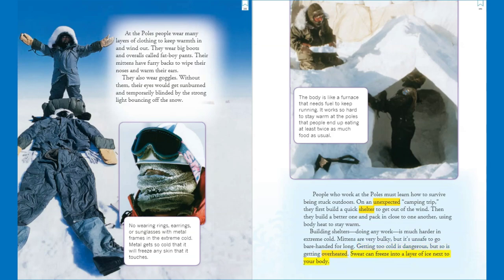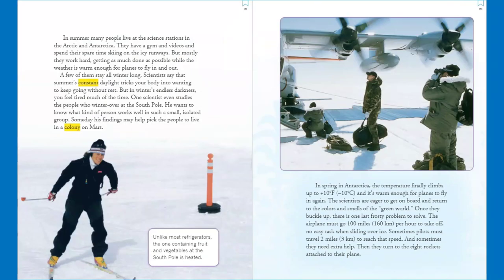Getting too cold is dangerous, but so is getting overheated — sweat can freeze into a layer of ice next to your body. The body is like a furnace that needs fuel to keep running. It works so hard to stay warm at the poles that people end up eating at least twice as much food as usual. In summer, many people live at the science stations in the Arctic and Antarctica. They have a gym and videos and spend their spare time skiing on the icy runways, but mostly they work hard getting as much done as possible while the weather is warm enough for planes to fly in and out.